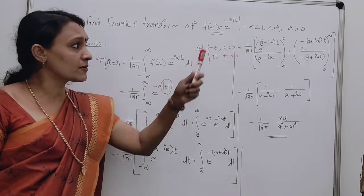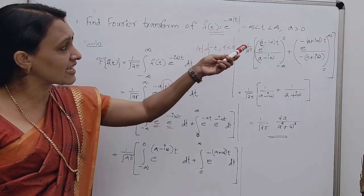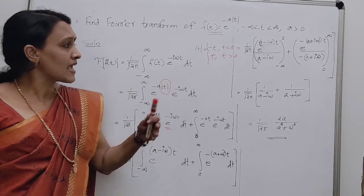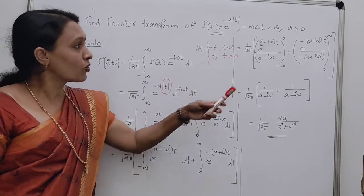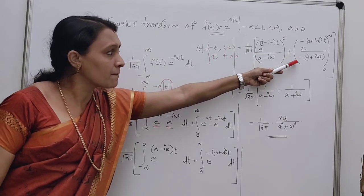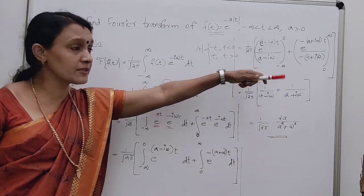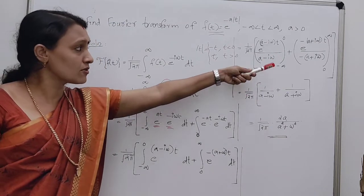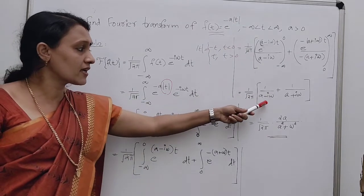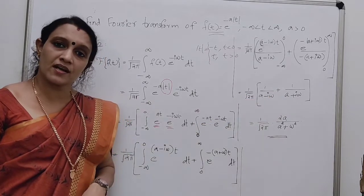For the second term: substituting the upper limit t = ∞ gives e^(-∞) = 0. Substituting the lower limit t = 0 gives e^0 = 1, divided by -(a+iω). With the existing negative sign, the two negatives cancel, giving 1/(a+iω). So the total is 1/(a-iω) + 1/(a+iω).